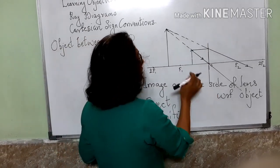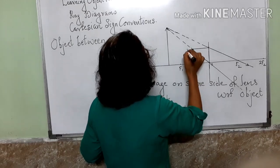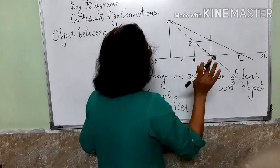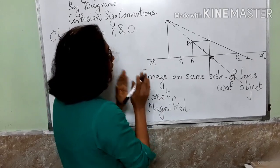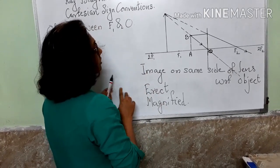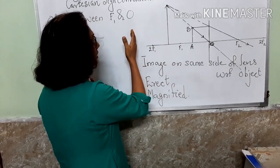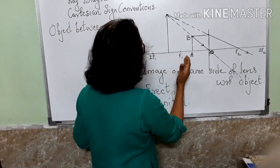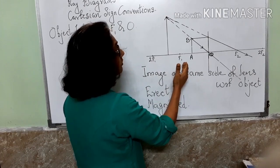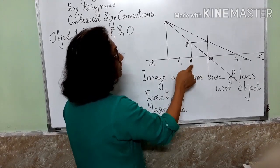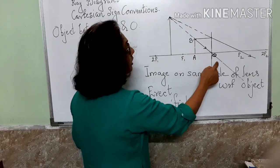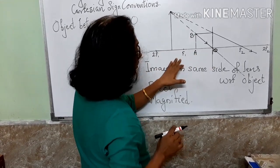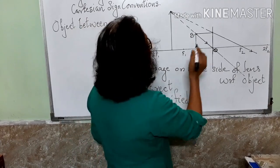This is the convex lens. Here we have kept the object AB between O and F1. In the previous class we studied the nature, position, and size of the image when the object was placed at infinity, beyond 2F1, at 2F1, between 2F1 and F1, and at F1. We were left with one more case: the object kept between F1 and O. This object AB lies between O and F1. We follow the same rules for drawing the ray diagram.